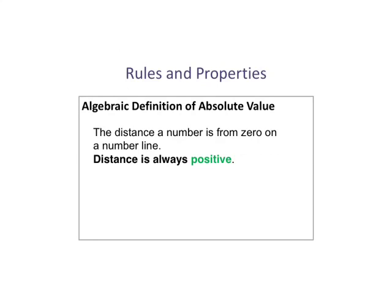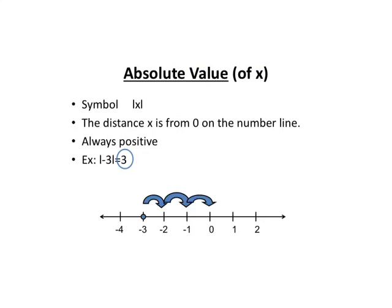Let's start off by reviewing the definition of absolute value — this is something you're going to want to write down. The absolute value is the distance a number is from 0 on a number line. And since distance is always positive, absolute value means always positive.